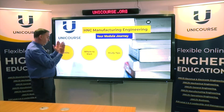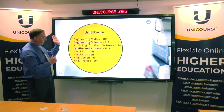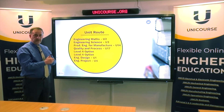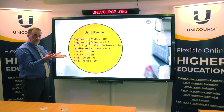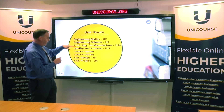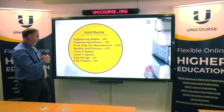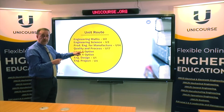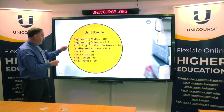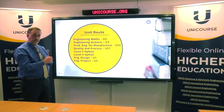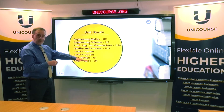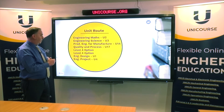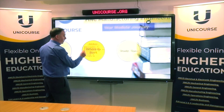Let's look at the preferred order for this program. Initially you hit the engineering maths module, which gives you good underpinning knowledge to then proceed to engineering science. Those two then give you the tools to navigate through production engineering for manufacture and quality and process improvement. At that point you pick a level four option, then another level four option, and you end the qualification with engineering design and finally the engineering project.